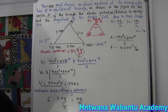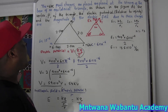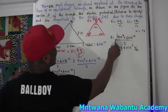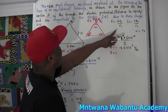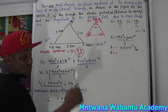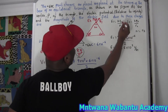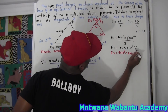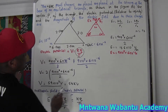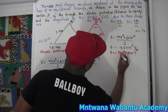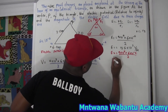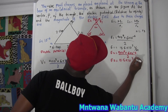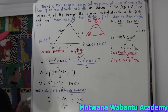Now let's find E₂. Since the charge and distance are the same — k = 9×10⁹, Q₂ = 6×10⁻⁶, r₂ = 2 — E₂ is also equal to 13.5×10³ volt per meter. So E₁ = E₂ = E = 13.5×10³ V/m.